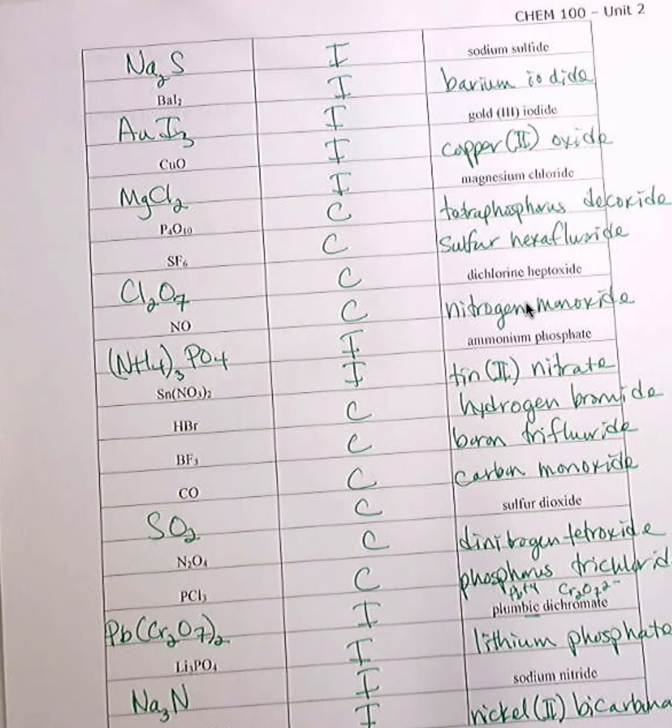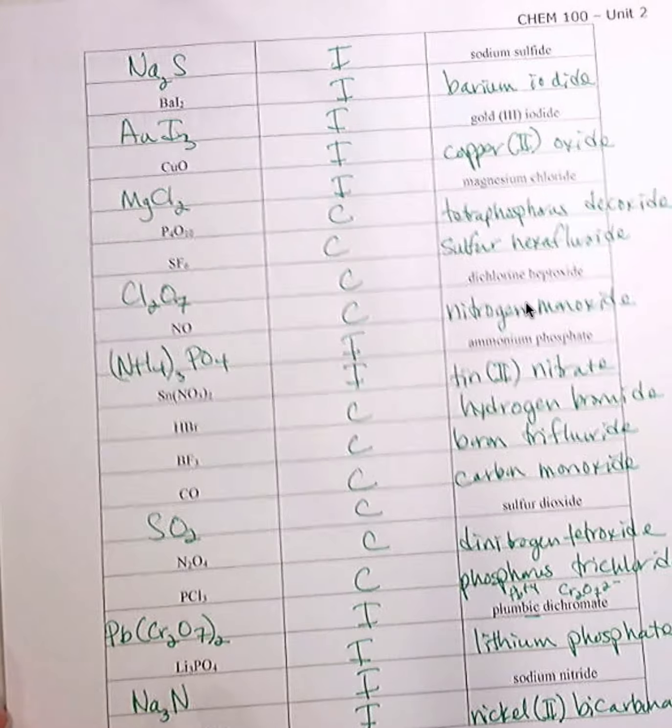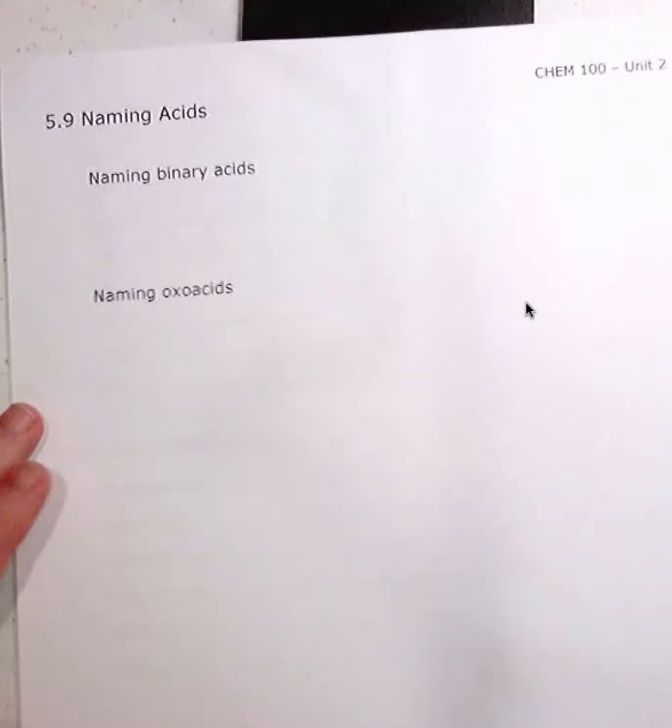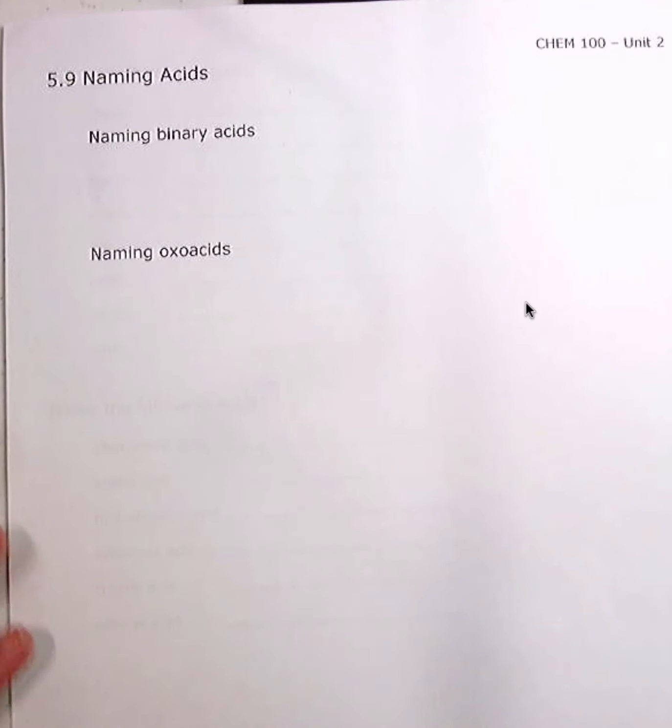So that concludes the ionic covalent nomenclature table. If there were some that you missed, or some that I missed, be sure to let me know. But practice, practice, practice. You can always print this out again and practice some more. It never hurts to practice this. You can never practice enough. Okay. We have a little bit more nomenclature left. And that is naming acids. Not dropping acids, but naming acids.